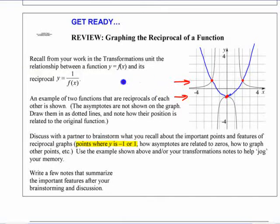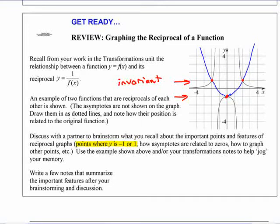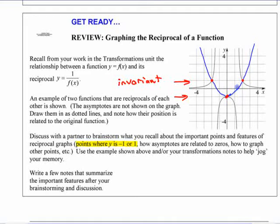Think about where the asymptotes occur. If you have that blue graph as the original graph, the asymptotes of the reciprocal occur where these are 0, right? Where that's 0. There's an asymptote for the reciprocal graph. Because if the original function is 0, 1 over 0 is undefined. And the same occurs over here.